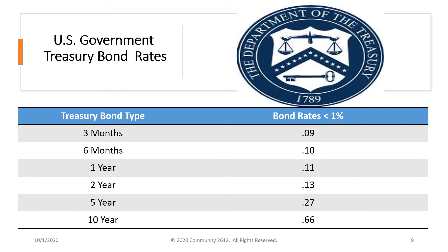The same applies to U.S. Treasury bonds. They're a safe place to put your money, but the rates are just really disrespectful. Looking at the 3-month, 6-month, 1-year, 2-year, 5-year, and 10-year federal treasury bonds, the rates are less than 1% — they don't even meet inflation. We're talking about 0.09% on a 3-month, 0.11% on a 1-year, 0.13% on a 2-year, and 0.27% on a 5-year. This is really disrespectful to savers.